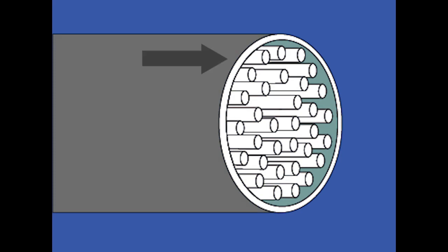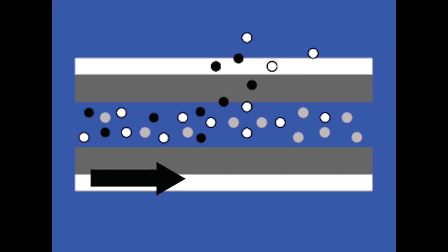The hollow fiber membrane consists of a series of narrow, semi-permeable tubes in a porous membrane. As compressed air travels through the fibers, oxygen and water vapor permeate the membrane and are vented off, leaving a stream of high purity nitrogen gas.